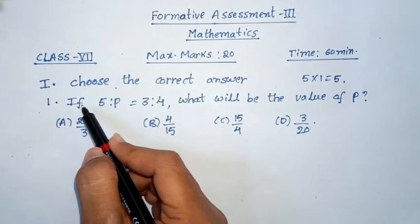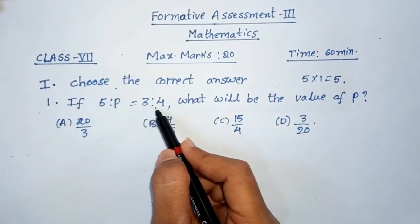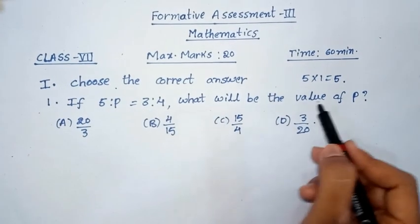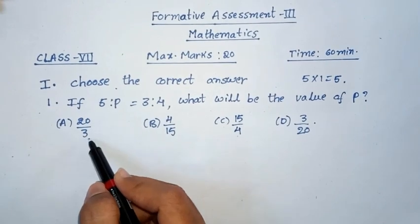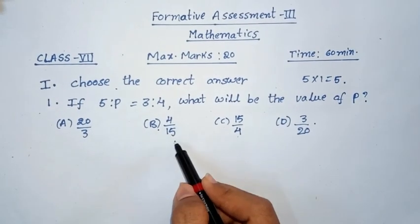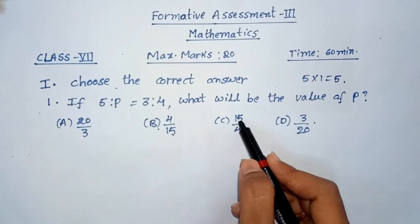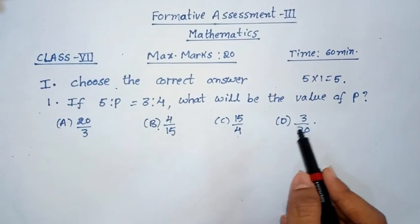First question, if 5 is to P equal to 3 is to 4, what will be the value of P? Option A, 20 by 3. Option B, 4 by 15. Option C, 15 by 4. Option D, 3 by 20.